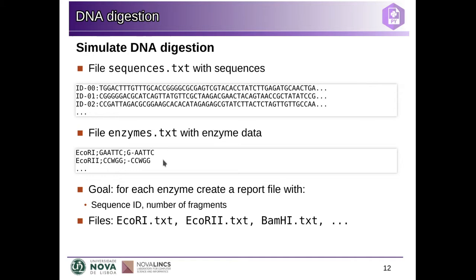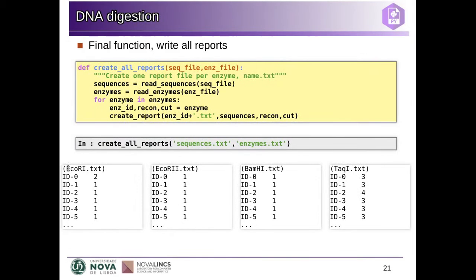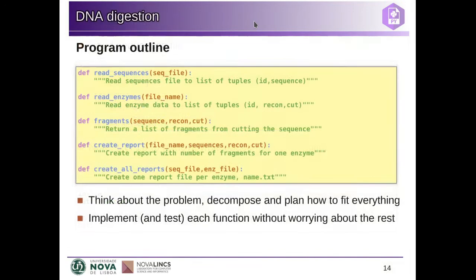What we want to do is to generate a series of report files, each one named the same as the corresponding enzyme with a .txt extension, and each one listing for all the sequences how many fragments we get if we digest that sequence with that enzyme. We want to produce a set of report files like this — for this enzyme, this sequence will be broken into two fragments, this one will be just one fragment, and so on. So we want one report per enzyme.